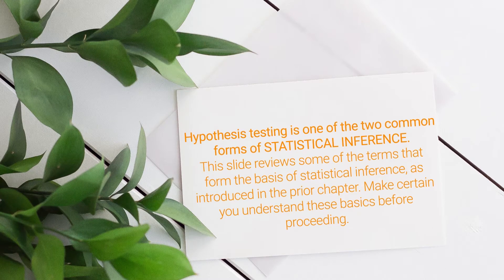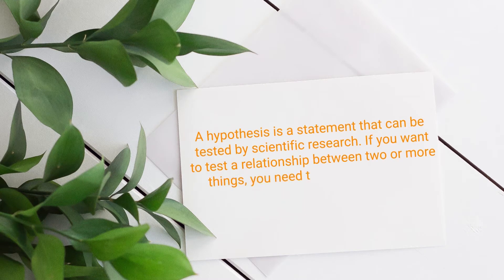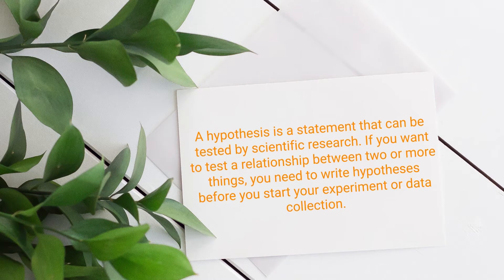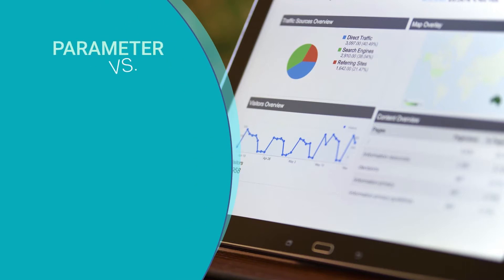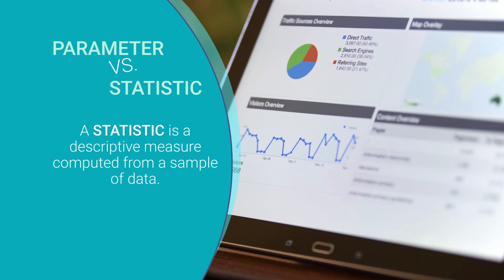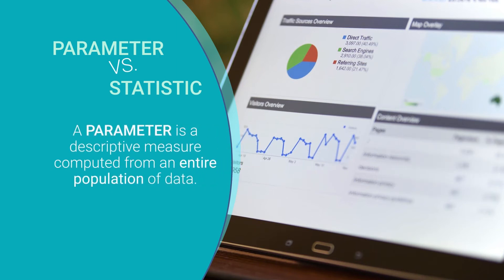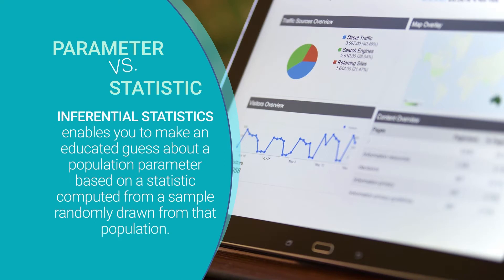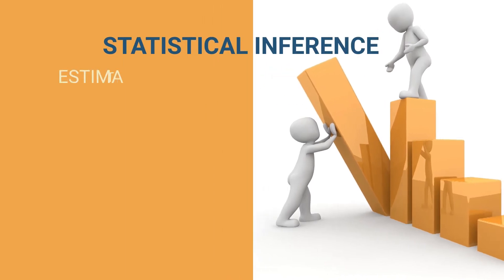This slide reviews some of the terms that form the basics of statistical inference as introduced in the prior chapter. A hypothesis is a statement that can be tested by scientific research. If you want to test a relationship between two or more things, you need to write a hypothesis before you start your experiment or data collection. A statistic is a descriptive measure computed from a sample; a parameter is computed from an entire population. Inferential statistics enables you to make an educated guess about a population parameter based on a statistic computed from a sample.